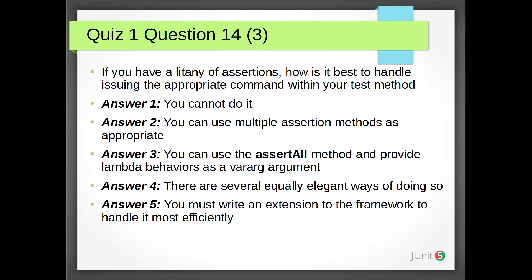Quiz 1 Question 14: If you have a litany of assertions, how is it best to handle issuing the appropriate command within your test method? Answer 1: You cannot do it. Answer 2: You can use multiple assertion methods as appropriate. Answer 3: You can use the assertAll method and provide lambda behaviors as a vararg argument. Answer 4: There are several equally elegant ways of doing so. Answer 5: You must write an extension to the framework to handle it most efficiently. The correct answer is Answer 3: you can use the assertAll method and provide lambda behaviors as a vararg argument.